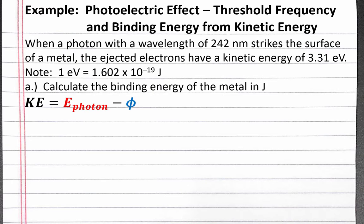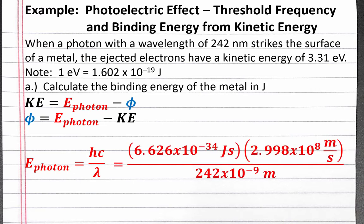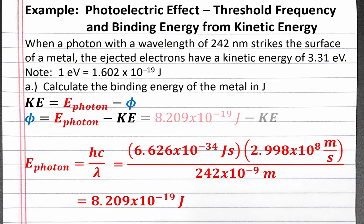For Part A, we start with the kinetic energy equation and solve for binding energy. Binding energy equals the energy of the photon that strikes the metal, minus the kinetic energy of the electron. To solve for the energy of the photon, we use hc over lambda, because we're given the wavelength of the photon. We plug in Planck's constant and the speed of light. The wavelength needs to be in meters instead of nanometers — nano means 10 to the negative ninth, so 242 nanometers is 242 times 10 to the negative ninth meters. Solving this equation, we get 8.209 times 10 to the negative 19th joules.